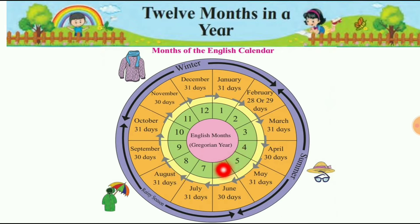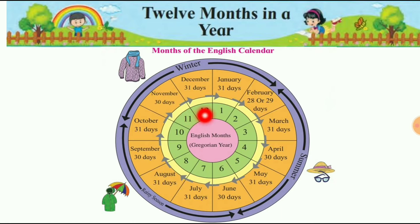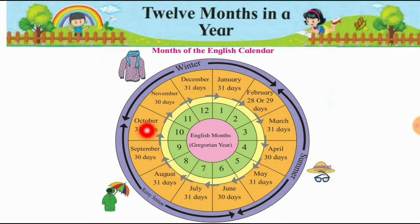Sixth is June, seventh is July, eighth is August, ninth is September, tenth is October, eleventh is November, and twelfth is December. Let me repeat: January, February, March, April, May, June, July, August, September, October, November, December. How many seasons are in a year?